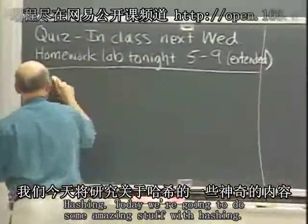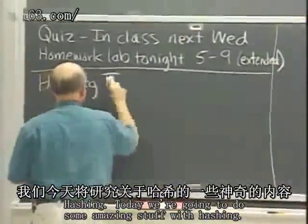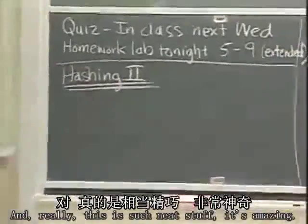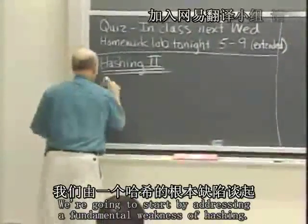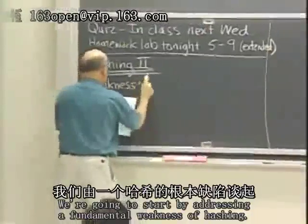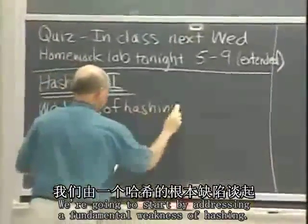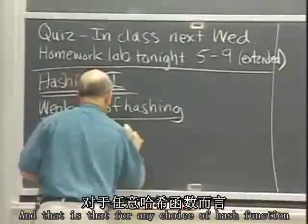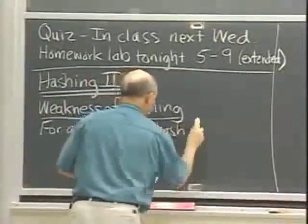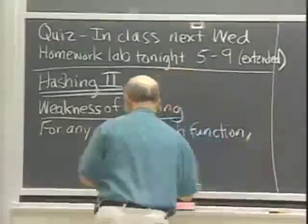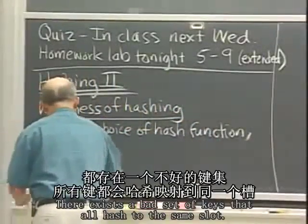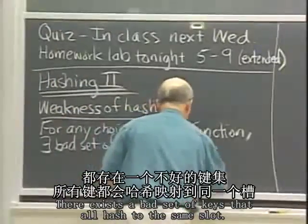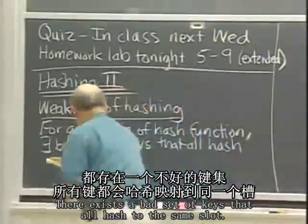Hashing. Today we are going to do some amazing stuff with hashing. This is such neat stuff. It is amazing. We are going to start by addressing a fundamental weakness of hashing, and that is that for any choice of hash function, there exists a bad set of keys that all hash to the same slot.